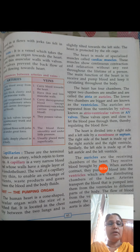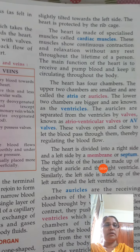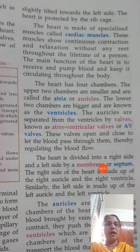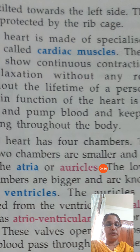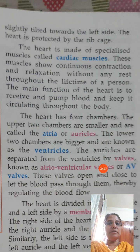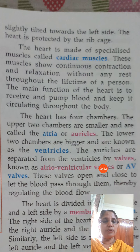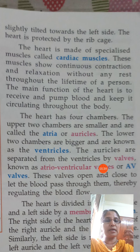Good evening children. We learned the structure of the heart. The heart, that pumping organ, is made up of the cardiac muscle. The muscle only has the power to contract and relax. So the heart is made up of cardiac muscle. It is not controlled by our will — we cannot control our heart. Our brain is controlling the contraction and relaxation of the heart.